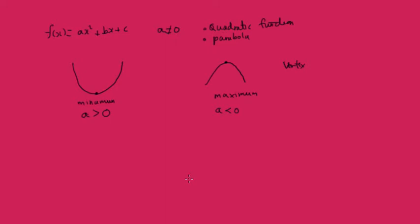It's important to be able to look at a quadratic function and work out some of its basic features. We want to know the basic general shape of the graph, where it cuts the y-axis and the x-axis, and the coordinates of the vertex.